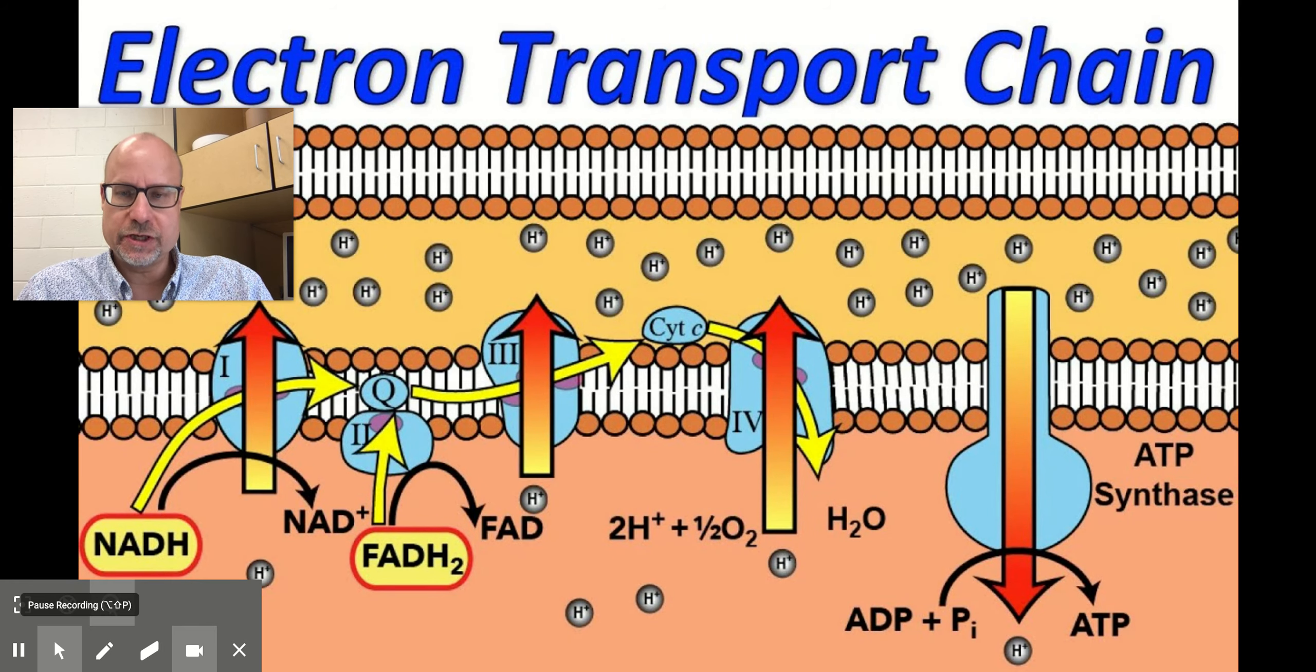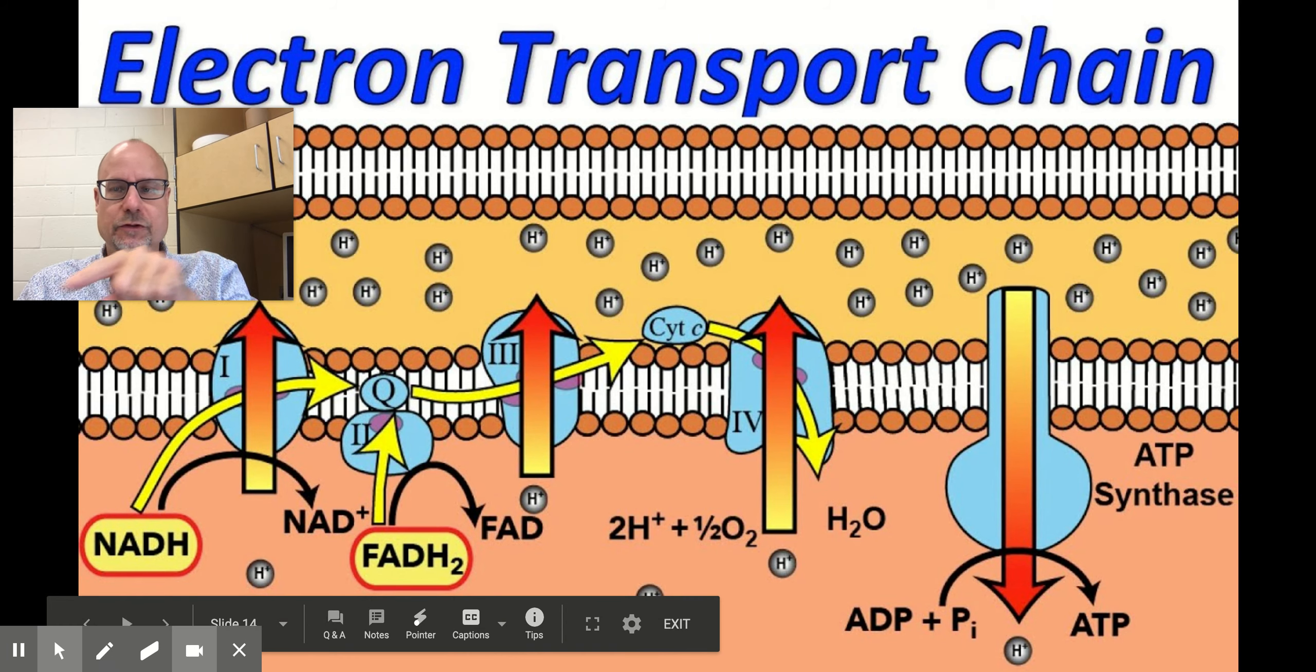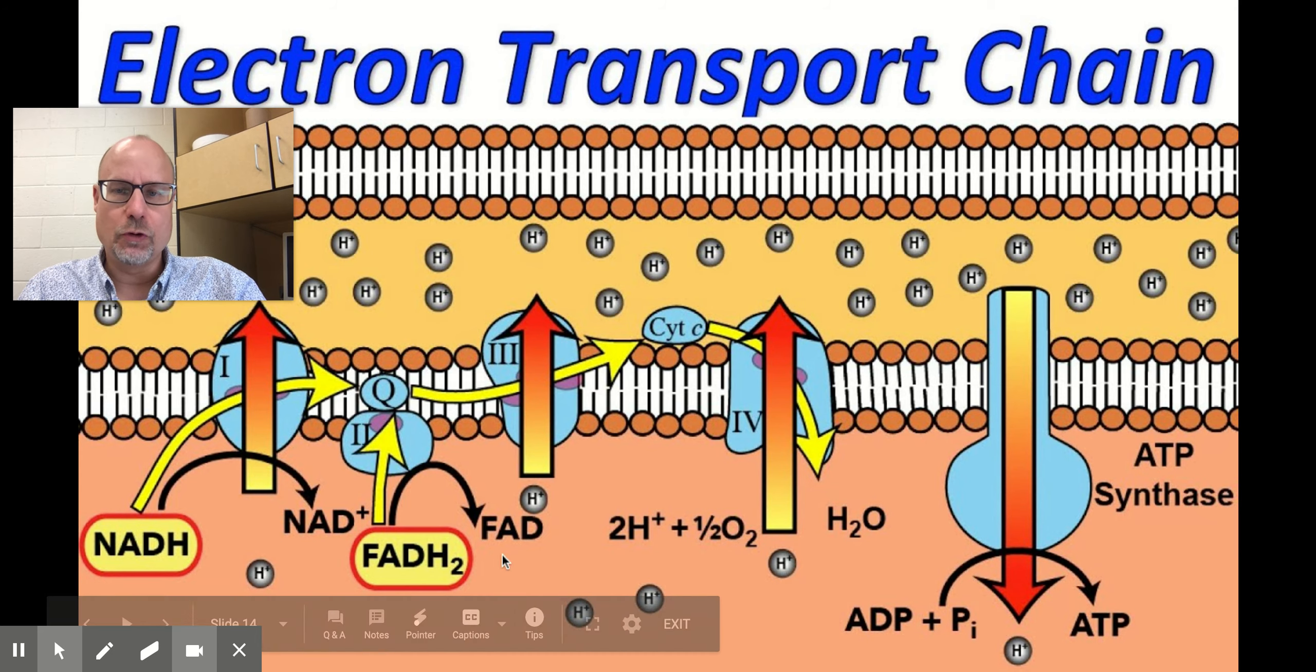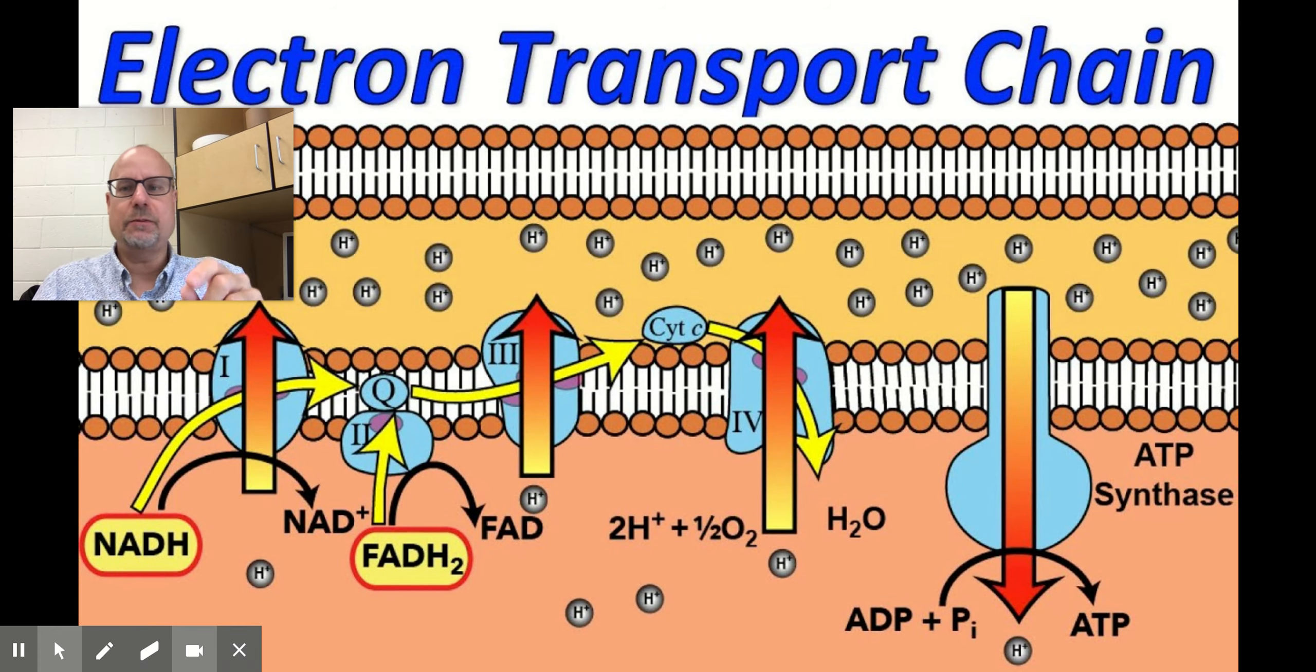The electron transport chain, if you remember, in a mitochondria, you've got the outside that looks like a kidney bean, and the inside with this really wavy looking inner membrane. The light orange part here represents the space between that outer kidney bean shape and the inner membrane of the mitochondria. This action is occurring on that actual interior membrane, the wiggly one inside the bean.